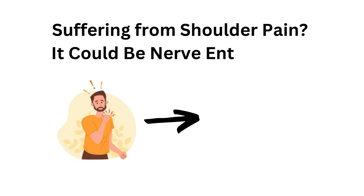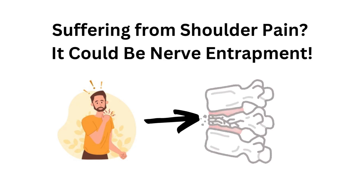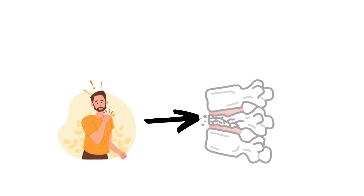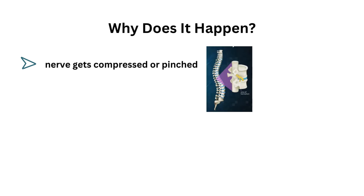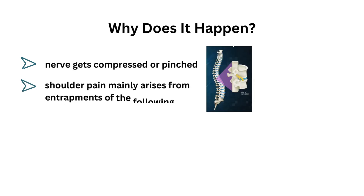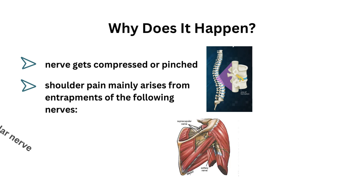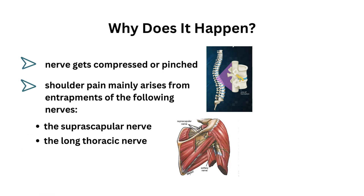Suffering from shoulder pain? It could be nerve entrapment. Nerve entrapment occurs when a nerve gets compressed or pinched. Shoulder pain mainly arises from entrapment of the following nerves: the suprascapular nerve, the long thoracic nerve, and the axillary nerve.